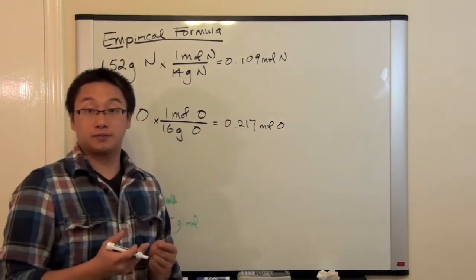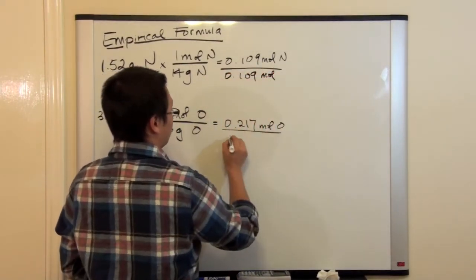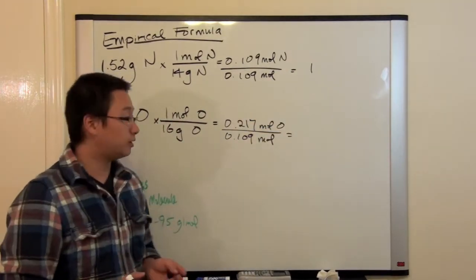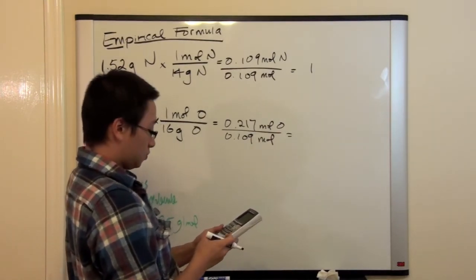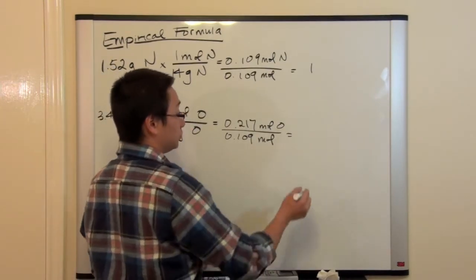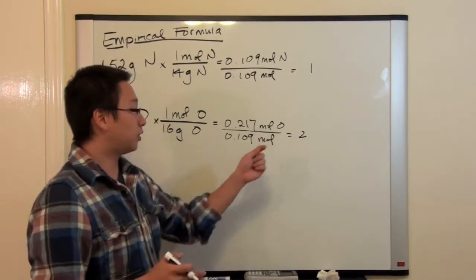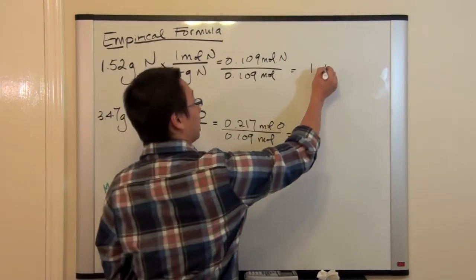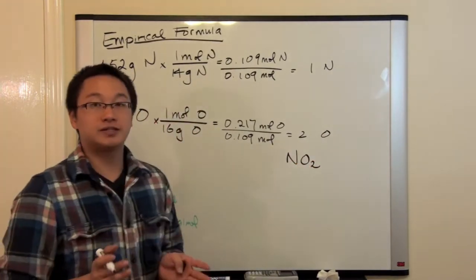We divide by the smallest number, which is 0.109. For nitrogen, this gives 1, so we have 1 nitrogen. For oxygen, the calculator gives 1.99, which is very close to 2 — we round it up to 2. Unlike the previous problem where we had 1.5, here 1.99 is very reasonable to round to 2. So we have 1 nitrogen and 2 oxygen, giving us the empirical formula NO₂.